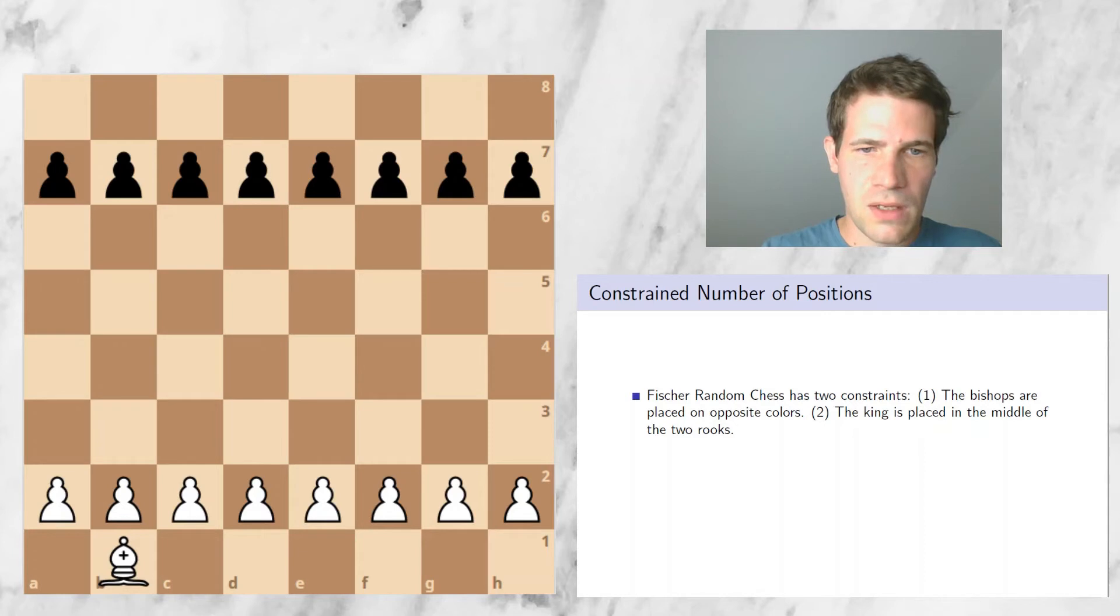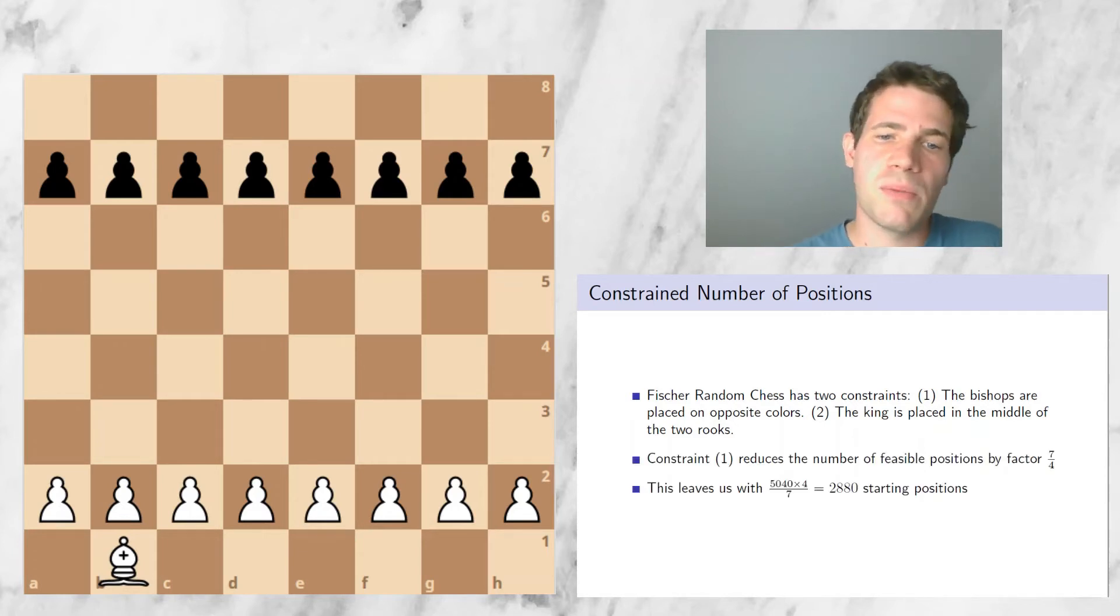So in total, four out of seven options that we have satisfy our constraint. The first constraint reduces the number of different starting positions which are feasible and satisfy the first constraint by a factor of 7/4. So we multiply the number 5040, which we got for different starting positions, with 4/7, which is the fraction of positions for which the two bishops are on opposite colors. This leaves us with 2880 starting positions.